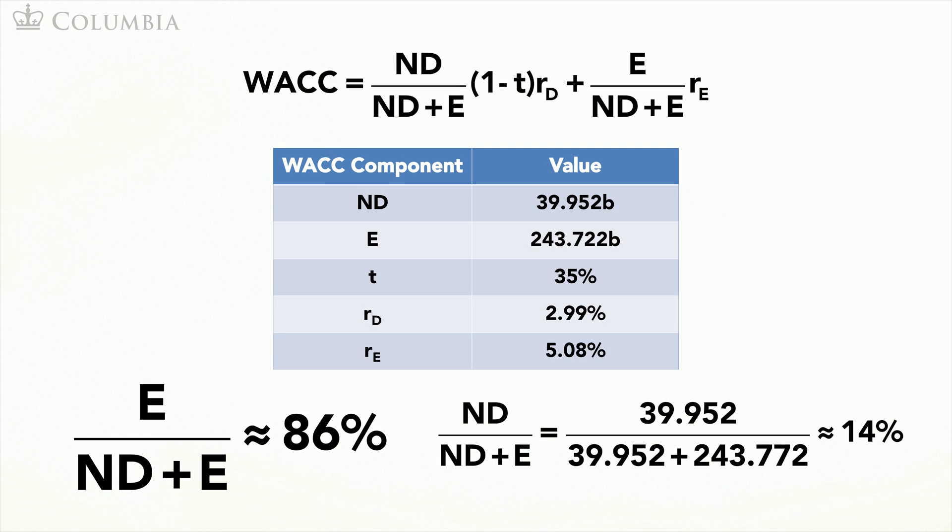Finally, we need the market risk premium. The market risk premium is the additional return we expect to obtain by holding the entire market over and above the risk-free rate. This number is difficult to estimate, but most estimates are between 3% and 6 to 7%. We will use 5%. Plugging these values into the CAPM equation leads to a cost of equity of 5.08%.